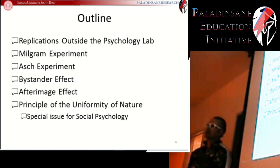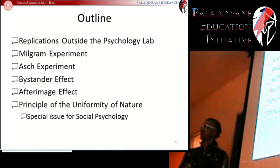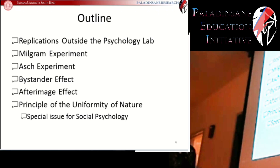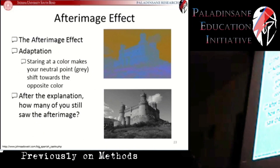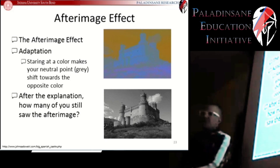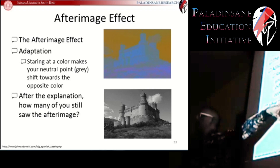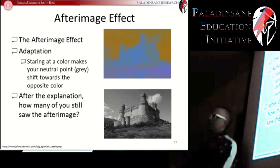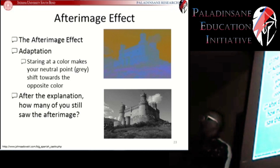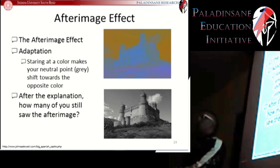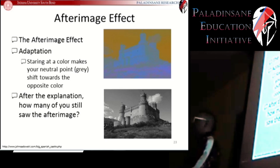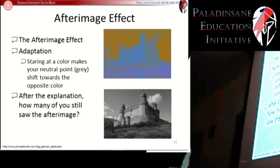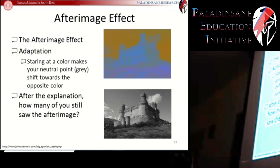We're going to use this to illustrate the principle of the uniformity of nature, a very important basic assumption that underlies all of science, and we're going to see how that is a special issue for social psychology. On one hand, we have effects where knowledge does not influence behavior — you still see a color even if you know everything about how your visual system works. On the other hand, we have the bystander effect and the Milgram effect, where knowledge of that effect actually changes your behavior. So we seem to have two different types of psychological effects.